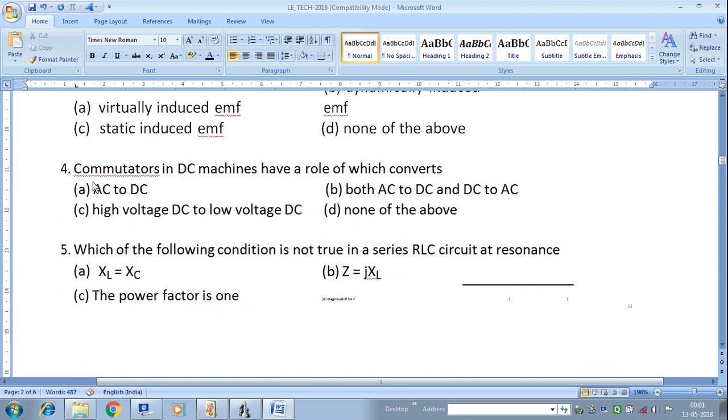Next question: Commutators in DC machines have a role of which converts: AC to DC, high voltage DC to low voltage DC, or both AC to DC and DC to AC. Answer B is correct because in case of generator, it converts AC to DC, and in case of motor, it converts DC to AC.